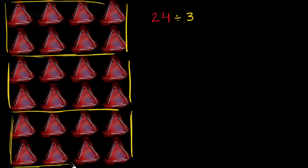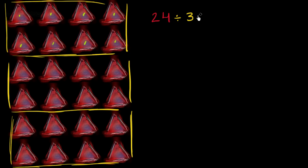So if I divide 24 into three equal groups, how many are going to be in each group? Well, we can count that — one, two, three, four, five, six, seven, eight in each group. So we could say that 24 divided by three is equal to eight.